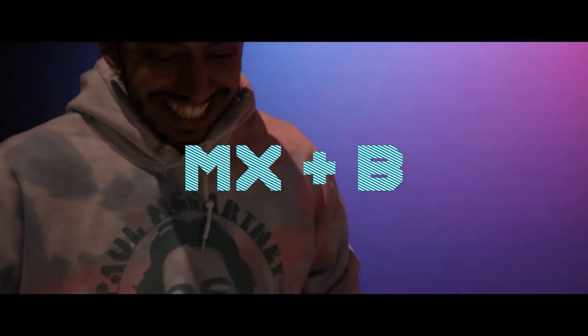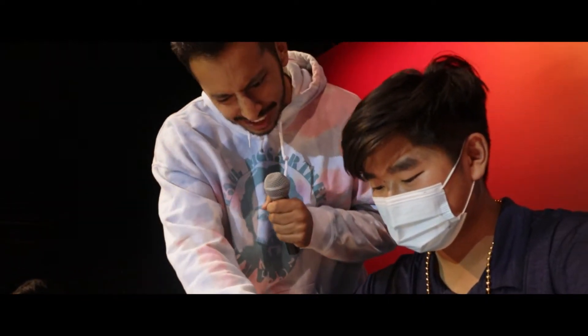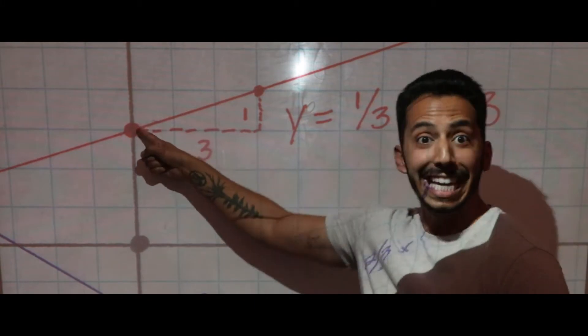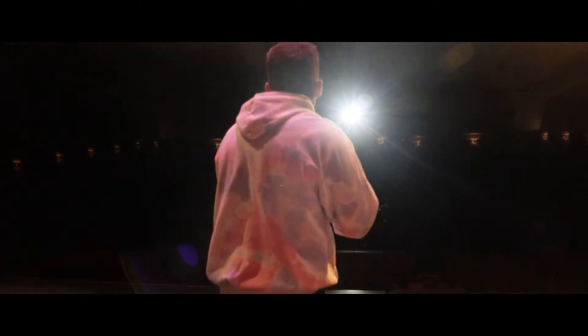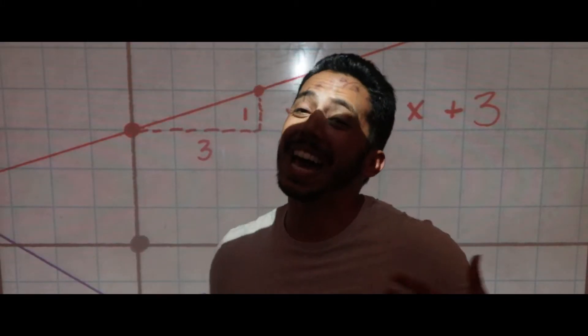Gotta start off with the b term — it's what we call the zero term. Double check your work, let's confirm, don't be afraid, ain't no concern. The y-intercept is where it all starts; some say that it's one of the most valuable parts. Now start at zero zero, then check your number.